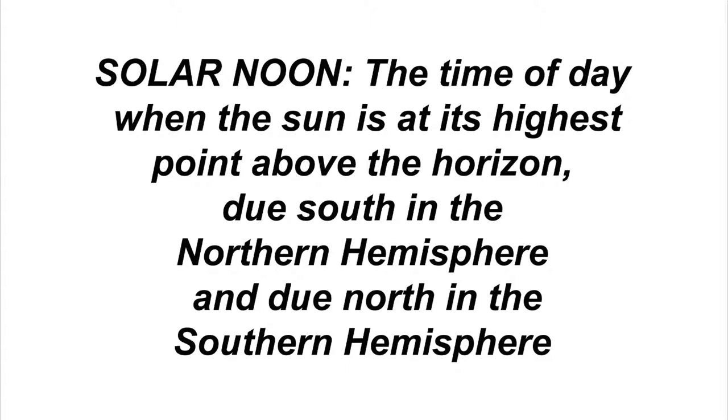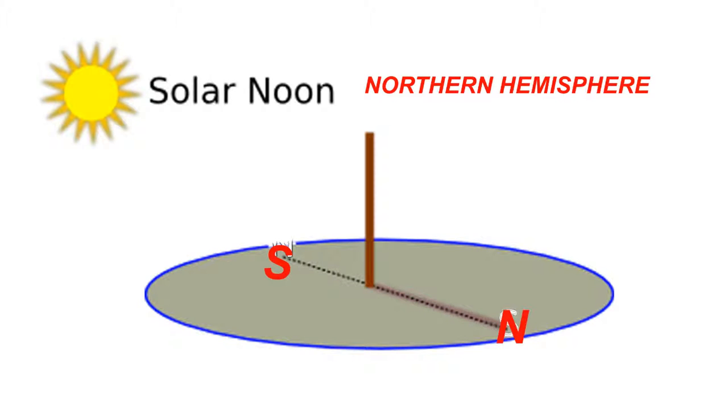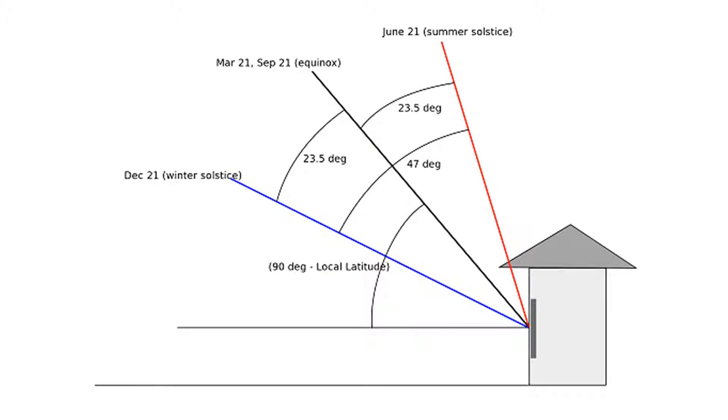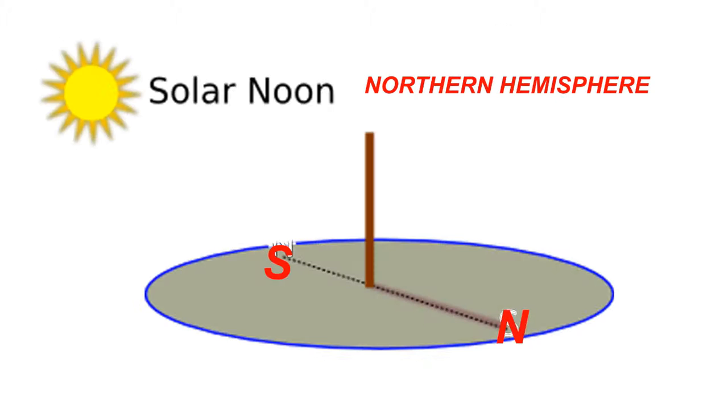At the exact time of your solar noon, mark the ground where the shadow falls. This is the angle the sun will be at solar noon all year. The sun will be lower in the sky all winter and higher in the sky all summer, but it will always be at this angle at solar noon for that particular day.